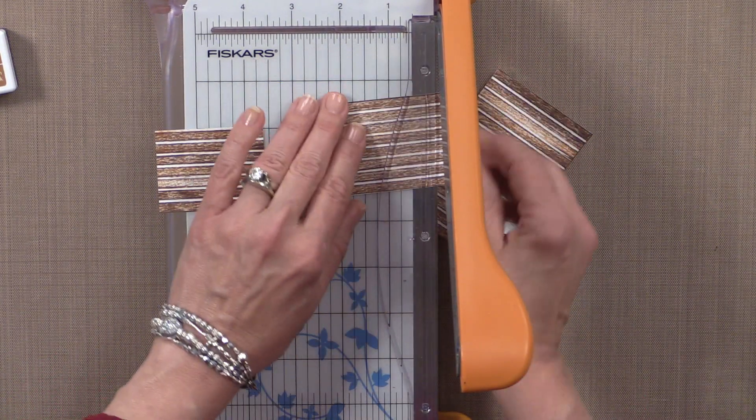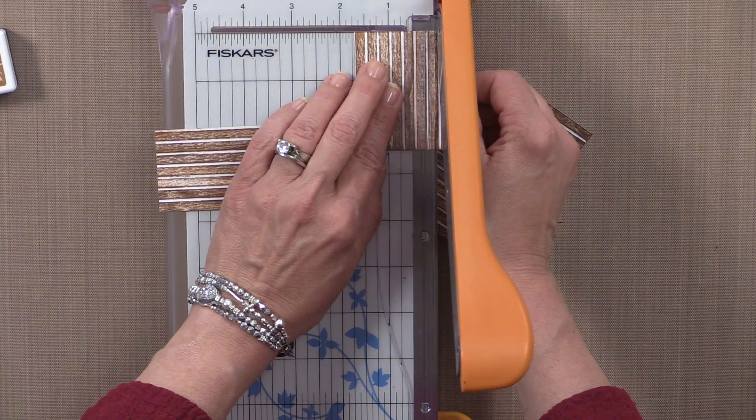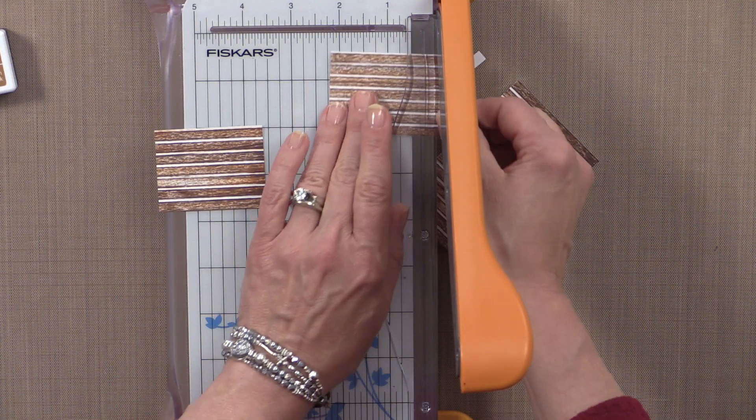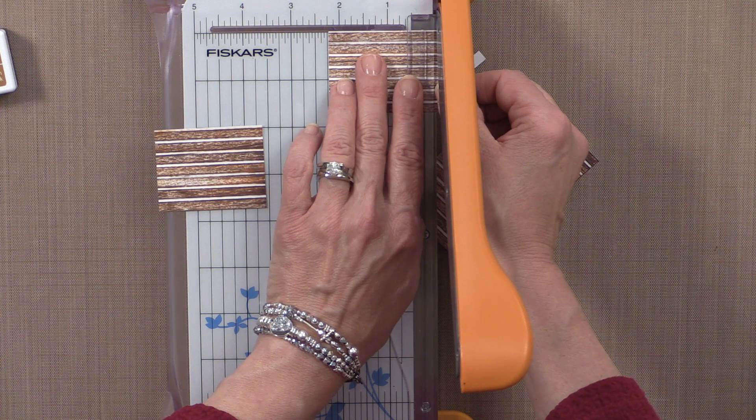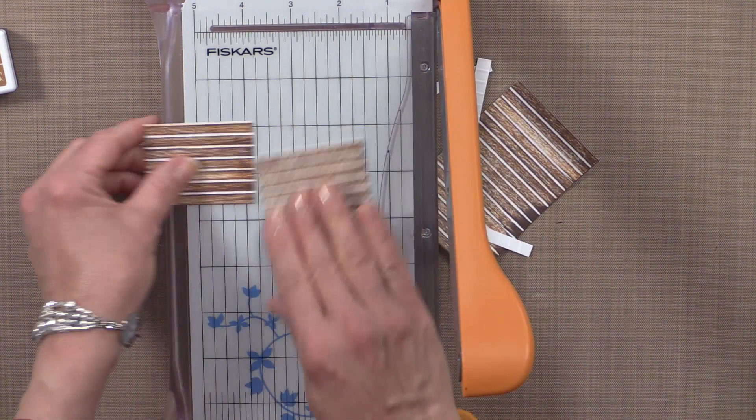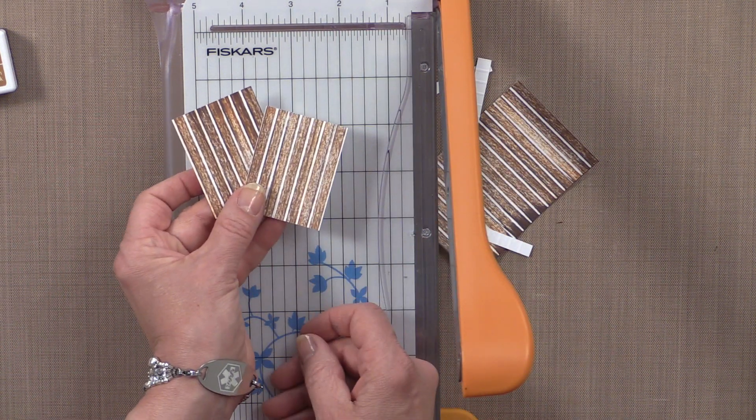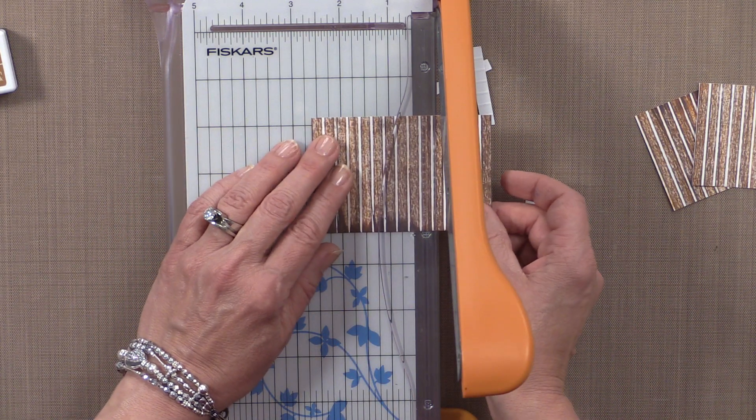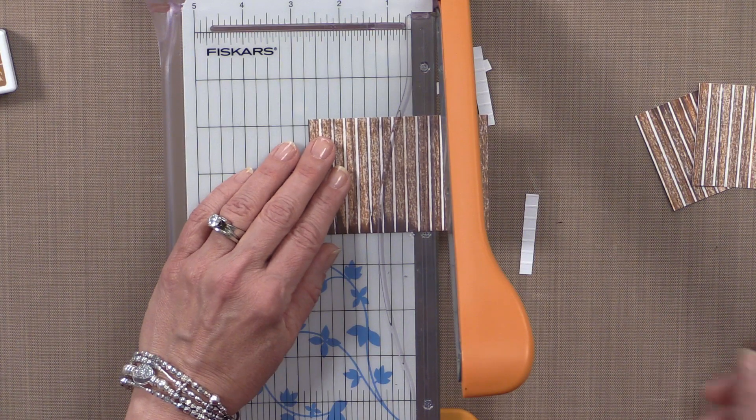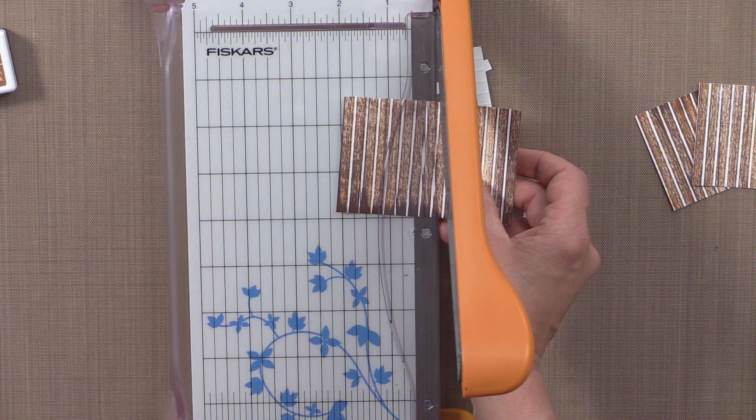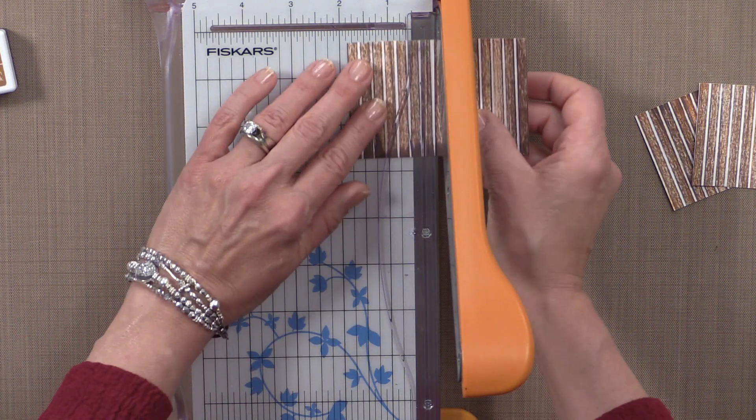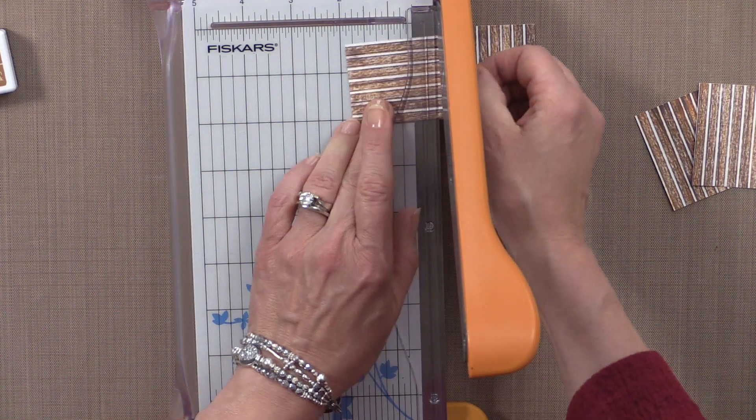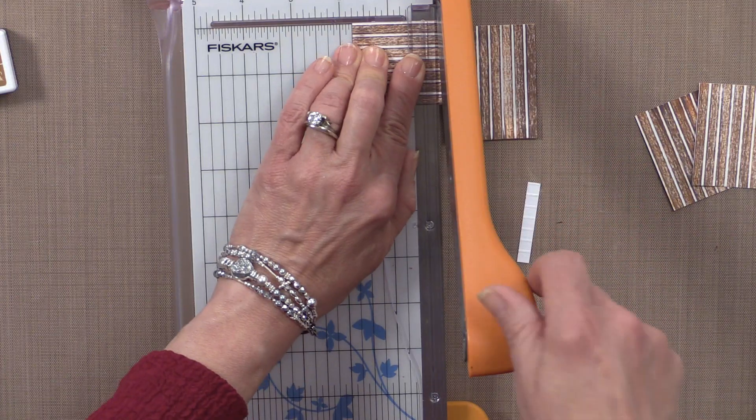Then I'm going to turn it and cut it at two and a quarter inches. What's nice about these quarter inch marks is since you've scored all of these at quarter inch marks, it makes it very easy to figure out if you're on the right spot because you're going to be on a white line. So for this one, I'm going to cut squares. I'm going to start at one and three quarter inches. I'm going to cut it and then turn it and do it again at one and three quarter inches.